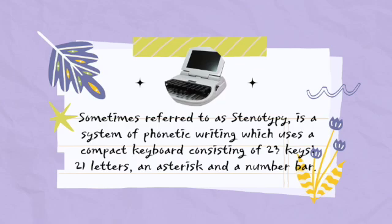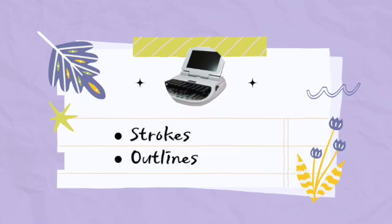In the previous video I discussed 22 keys — that was 21 letters plus an asterisk — because the number bar was not included there. Now adding the number bar brings the total to 23 keys in all. It is also very important to take note of two terms: strokes and outlines.